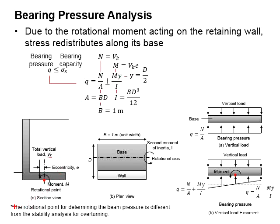It is noted that the rotational point for determining the bearing pressure is here. It is different from the rotational point that you use to determine the overturning of the retaining wall. The rotational moment for overturning the retaining wall is referring to the toe here.